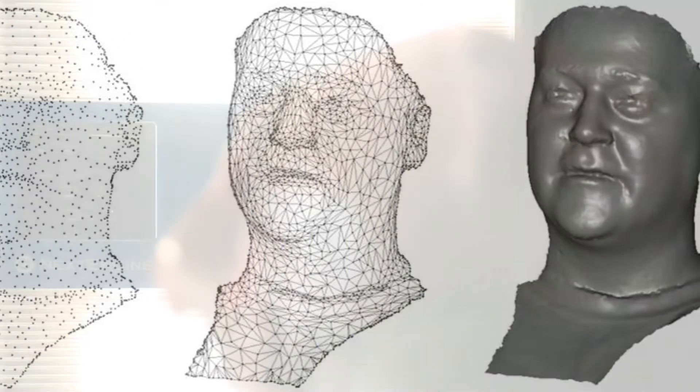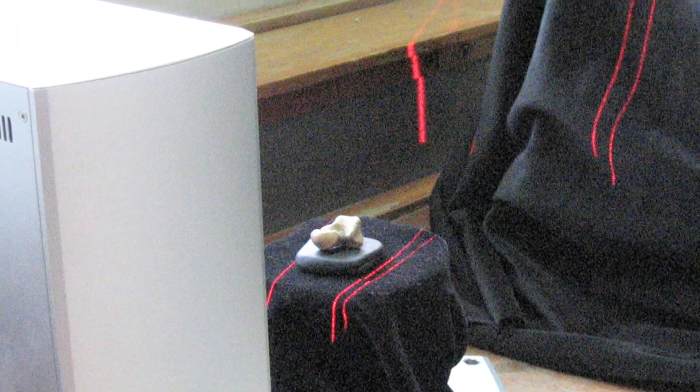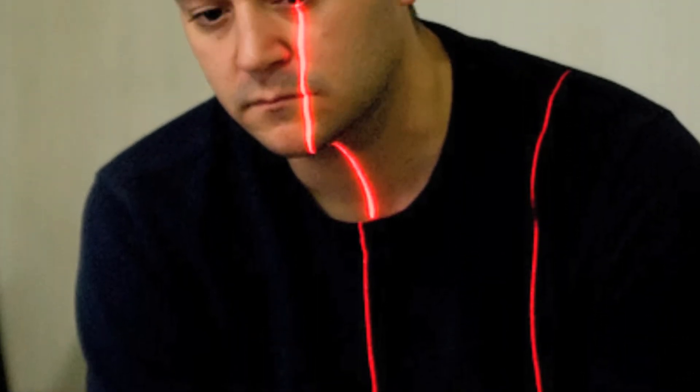Essentially what happens is as the laser goes across the surface, a sensor captures that information of where the laser is contacting the surface, and from that it translates that information into a digital model. We essentially create a digital cast of the object that we can have inside the computer, and when that object has to go back away or even in some cases back in the ground, we still have a full three-dimensional copy of it. That's a phenomenal tool for research and education.